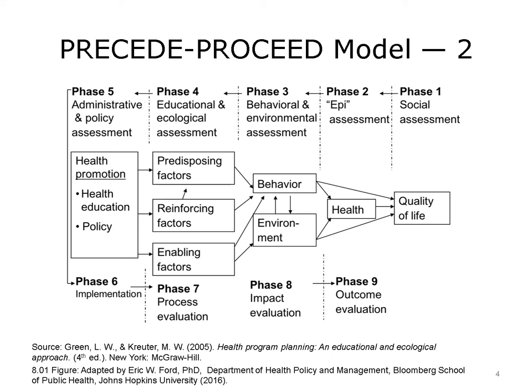And ultimately, in Phase 9, we'll look at health outcomes. Do we see those people who are riding bikes having better health status? Have they lost weight? Is their cardiovascular function improving? So there's a quick overview of the PRECEDE-PROCEED model.